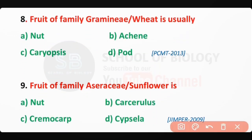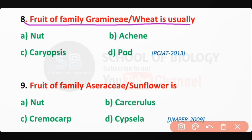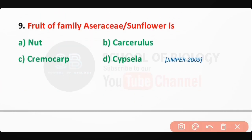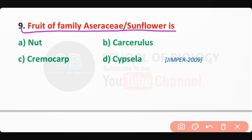Q8: The fruit of family Gramineae (wheat) is usually caryopsis — correct answer is option C. Q9: The fruit of family Asteraceae (sunflower) is cypsela — correct answer is option D.